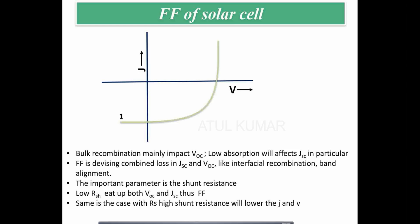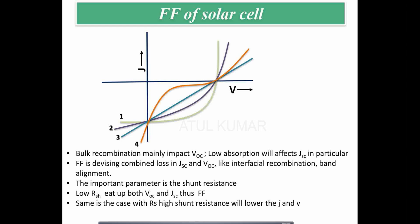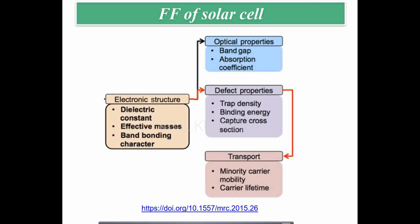Fill factor tells us how well the extraction of voltage and current is occurring. From the material aspect, for devices like CJTS or perovskite solar cells, the electronic structure, dielectric constant, effective mass, and band bonding characters define the basic electronic characteristics of the device — imparting optical properties, defect properties, and transport properties.